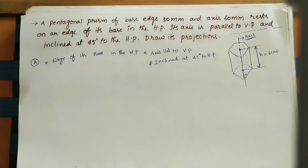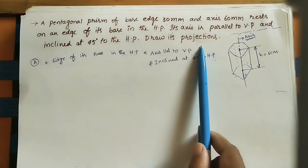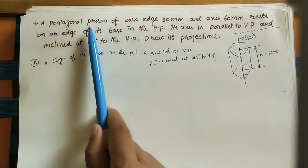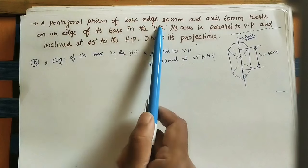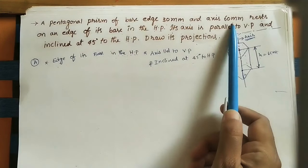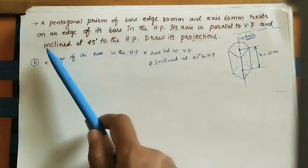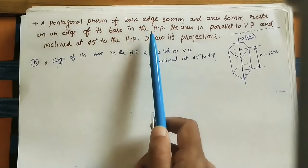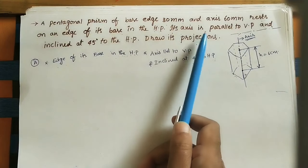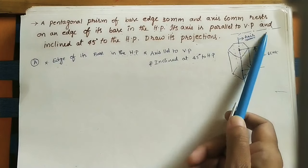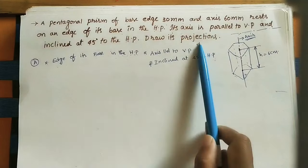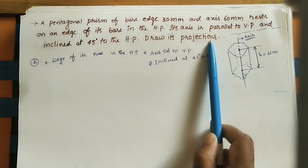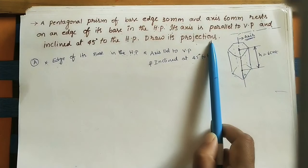Welcome to the channel. Let us discuss how to do the projections of the given solid — it is a pentagonal prism. The given question: a pentagonal prism of base edge 30 mm and axis 60 mm. Here projections means we have to do the front view and top view of the given object — two views.